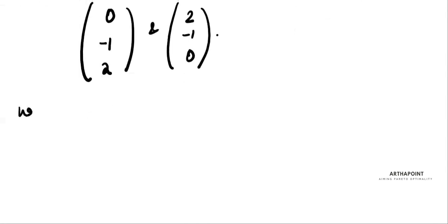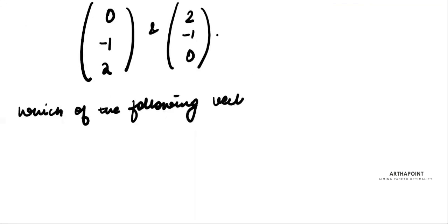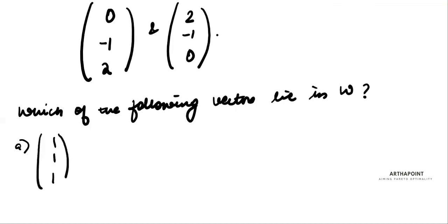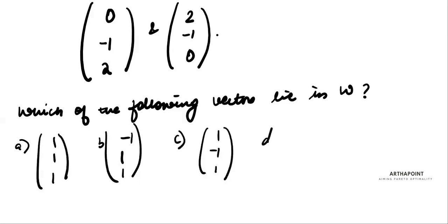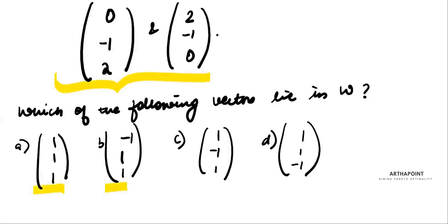The question asks which of the following vectors lie in W. Four vectors are given: (1,1,1), (-1,1,1), (1,-1,1), and (1,1,-1). It's a very simple question — it's saying one of these vectors is a linear combination of the two spanning vectors.